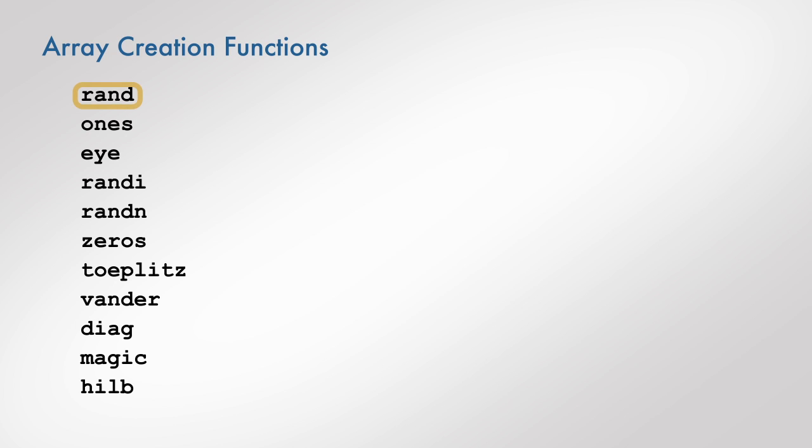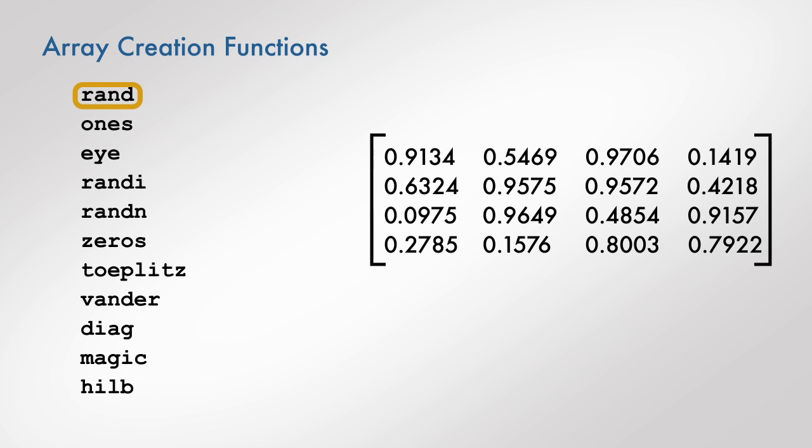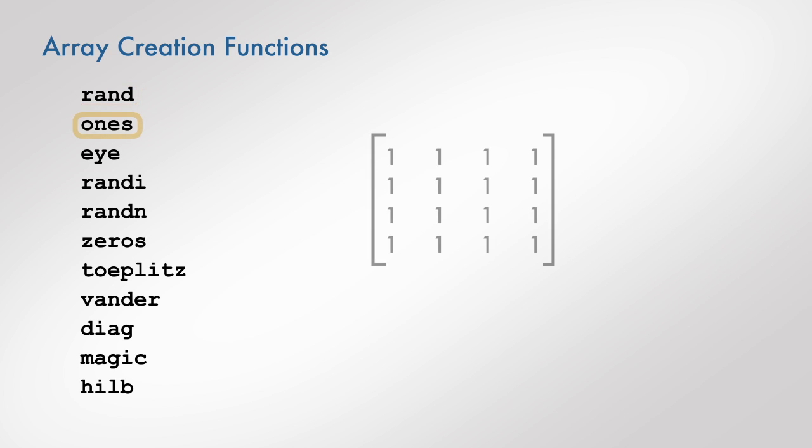For example, the rand function creates an array in MATLAB whose elements are randomly chosen numbers between 0 and 1. The ones function creates an array in MATLAB whose entries are all equal to 1.